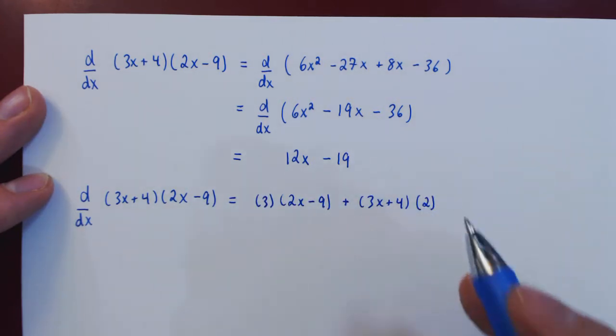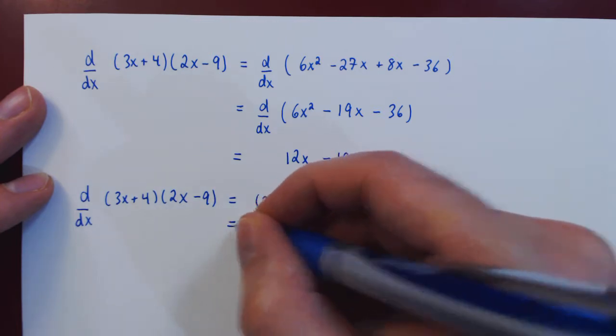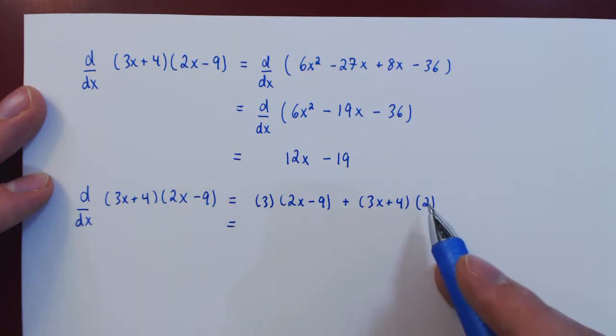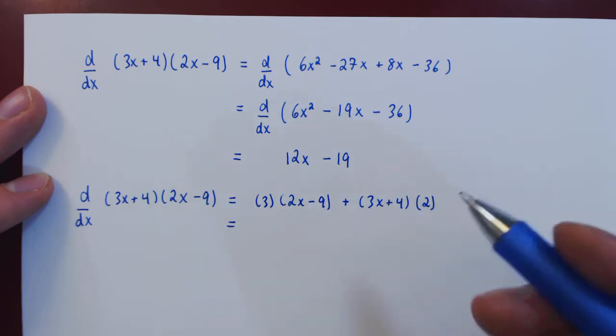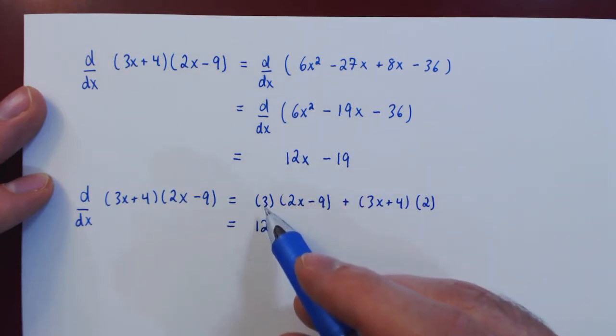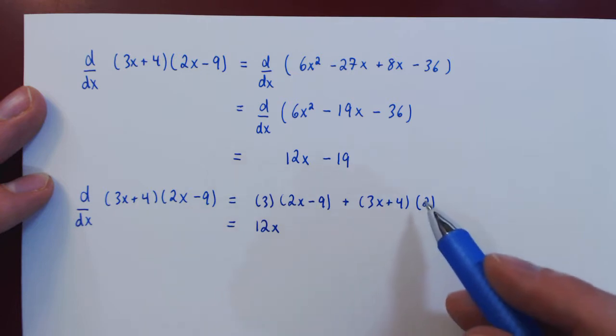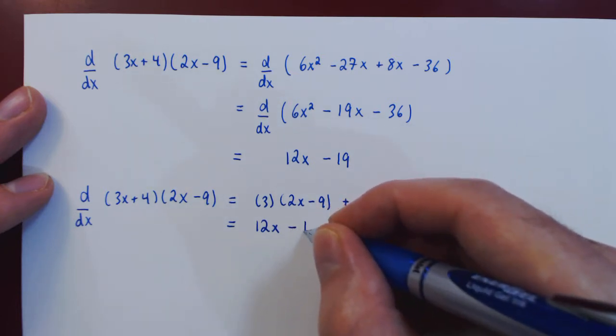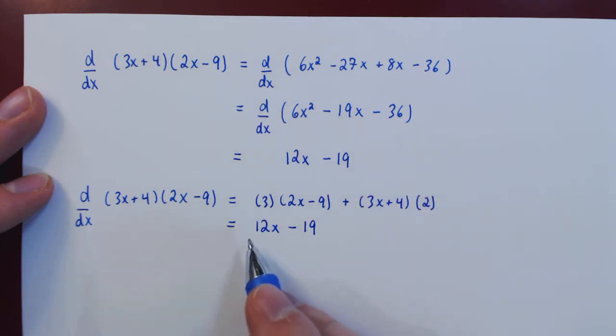Now that we have the result from the product rule, we can multiply and regroup. So we have here 6x, but then here plus 6x, that is 12x. And let's look at the constant terms. Negative 27 plus 8, negative 19. So we arrive at the same answer.